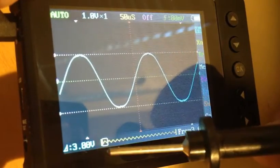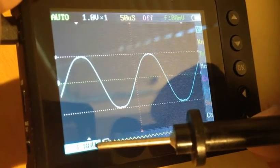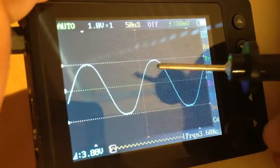So it doesn't show up too well on the screen, but it says 3.88 volts. So the change in voltage from peak to peak of this waveform from here to here is 3.88 volts.